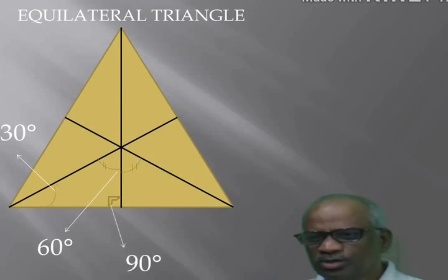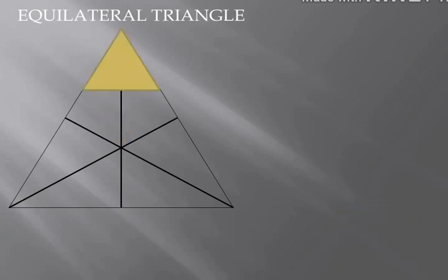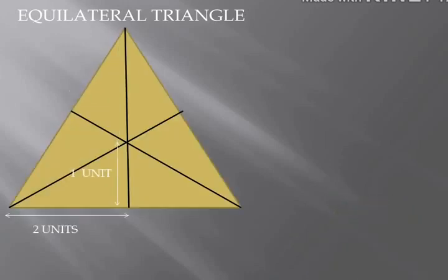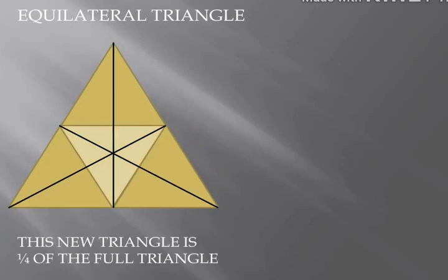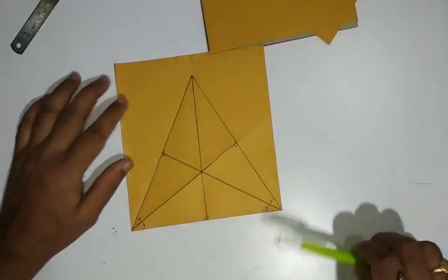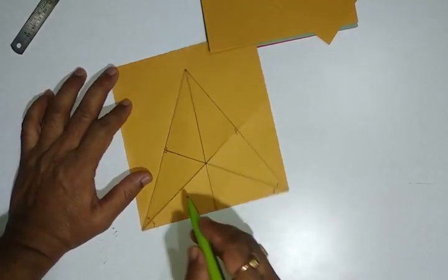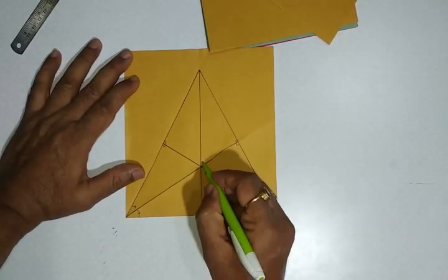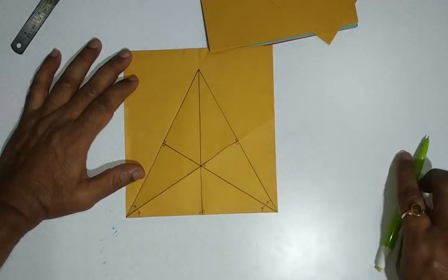The equilateral triangle can be divided into four congruent equilateral triangles. This is an equilateral triangle which has got three perpendicular bisectors to all the three sides, and the meeting point, let us call it as O.